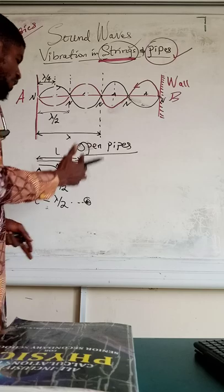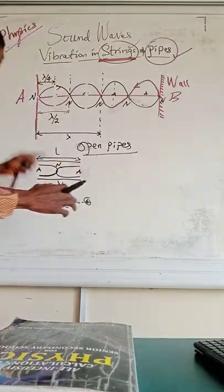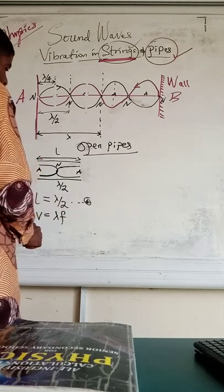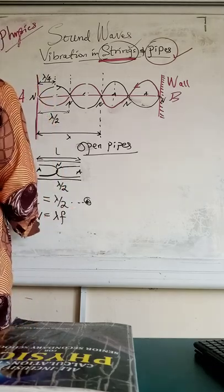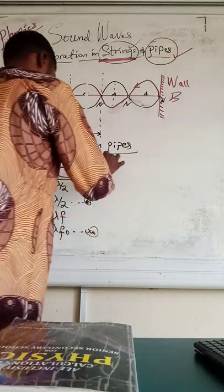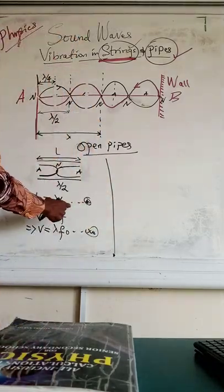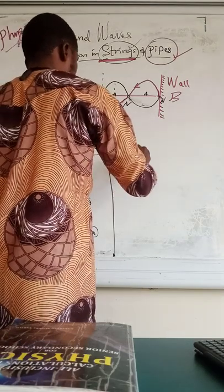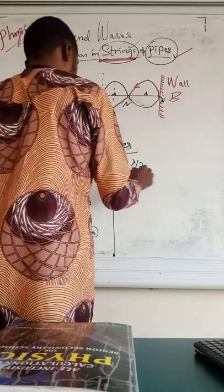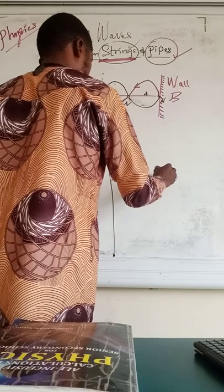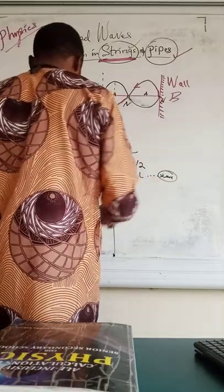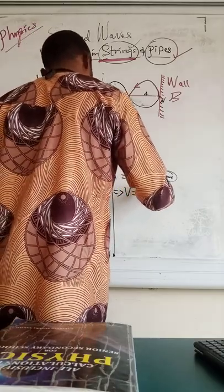Let's find the fundamental frequency for open pipes. Recall that V = lambda × f, and we want f-naught, so V = lambda × f₀. From the equation L = lambda/2, cross-multiplying gives lambda = 2L. Substituting into V = lambda × f₀ gives V = 2L × f₀.